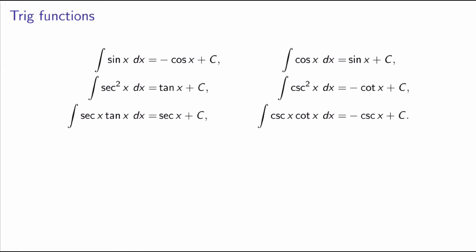Another set of functions we studied are trig functions. We can undo the differentiation rules to get antiderivatives for a bunch of trig functions. For example, the antiderivative of sin(x) is minus cos(x) plus C, because the derivative of minus cos(x) gives minus minus sin(x), which gives back sin(x). Similarly for cos(x). The antiderivative of secant squared of x is tan(x) plus C, because the derivative of tan(x) gives back secant squared of x. Similarly for cosecant squared of x, and also for secant·tan and cosecant·cot. Note this does not give you the integral of an arbitrary trig function — for example, the general antiderivative of tan(x) dx we can't yet calculate using these rules; we'll learn that in a few weeks.